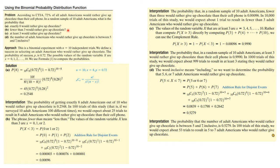Next, what about fewer than 3 giving up their cell phone? P(X < 3) = P(X=0) + P(X=1) + P(X=2), since those are disjoint events. This equals 10C0 × (0.72)^0 × (0.28)^10, plus 10C1 × (0.72)^1 × (0.28)^9, plus 10C2 × (0.72)^2 × (0.28)^8. Adding all those calculations together gives the resulting probability.